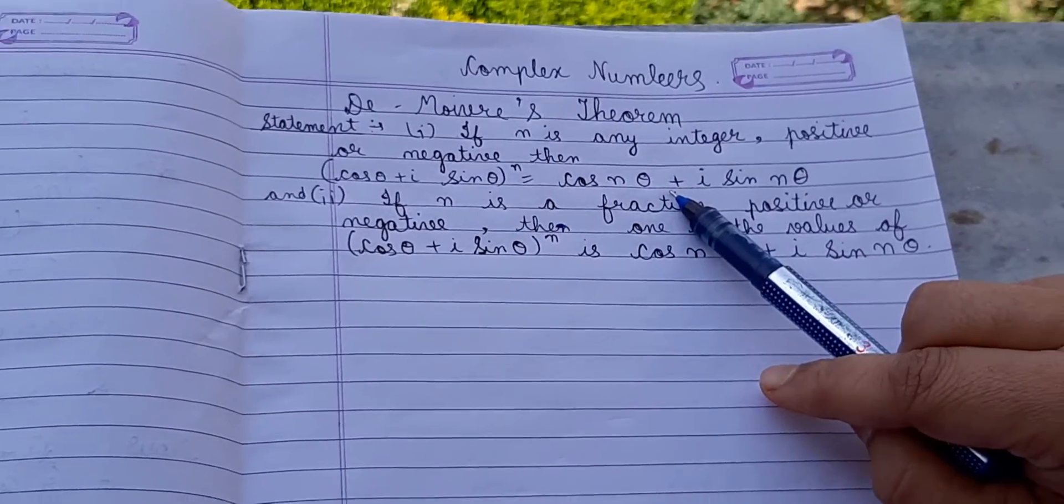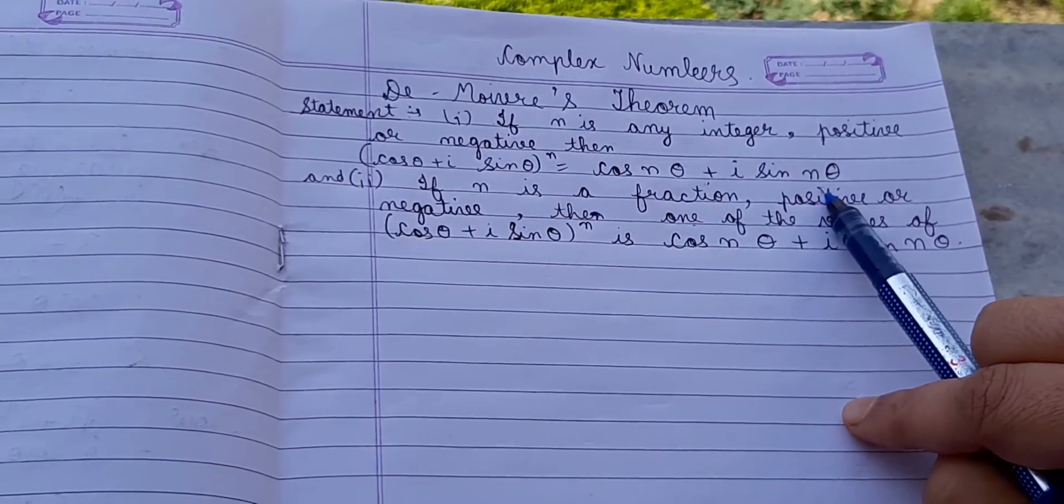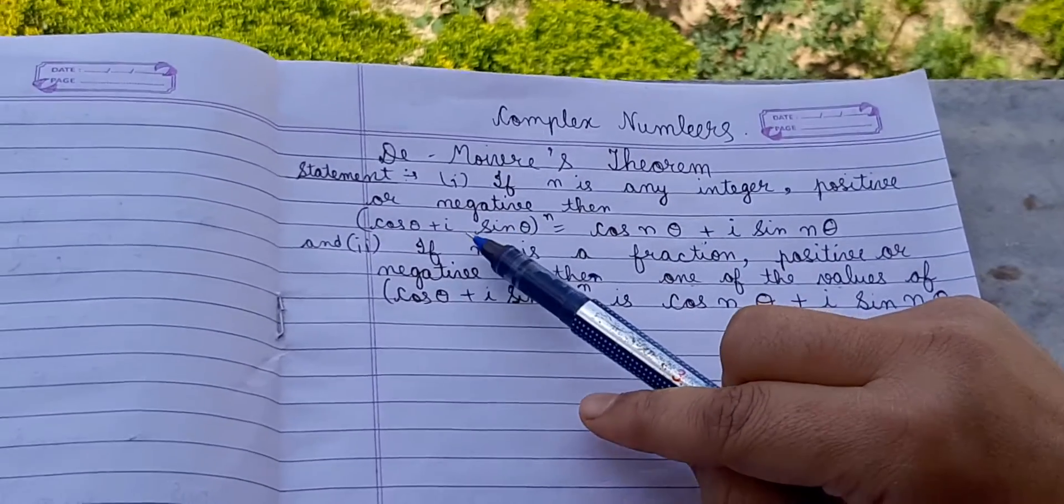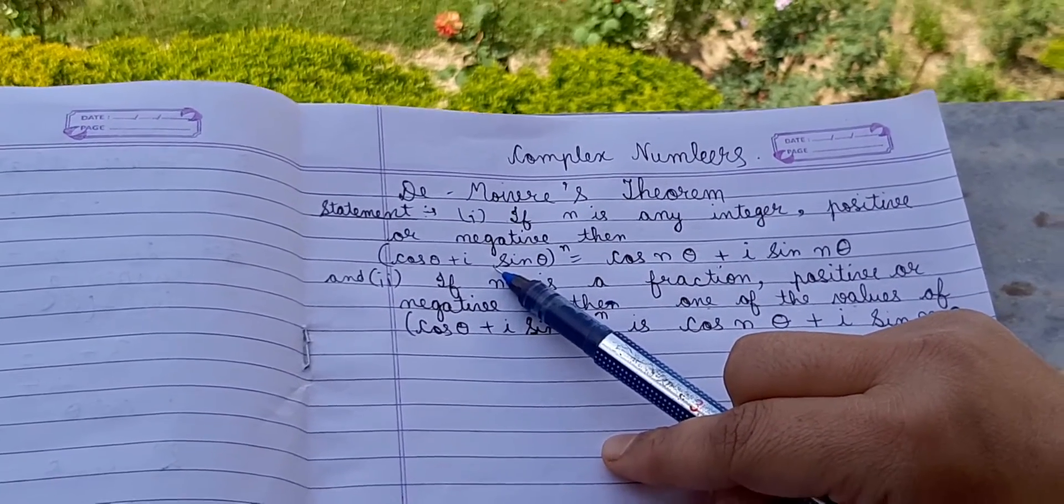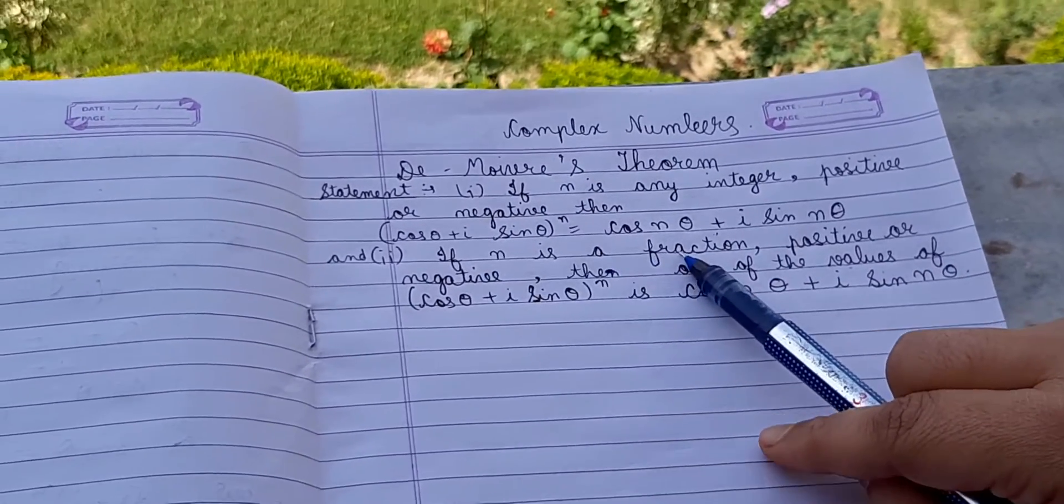That is, if we are given cos nθ + iota sin nθ, then it can also be written as (cos θ + iota sin θ) raised to power n. Its second part: if n is a fraction, positive or negative,